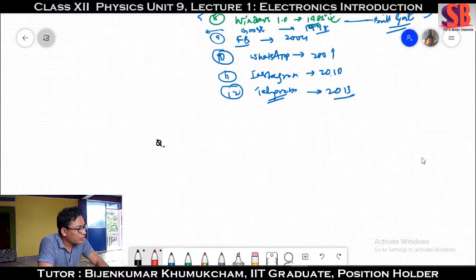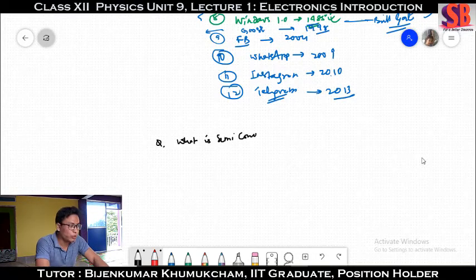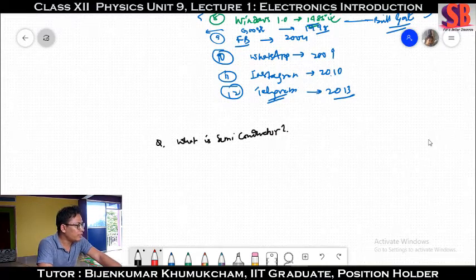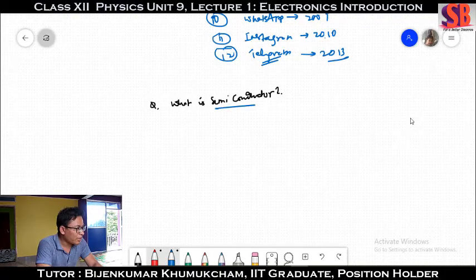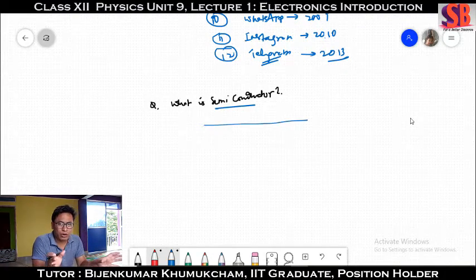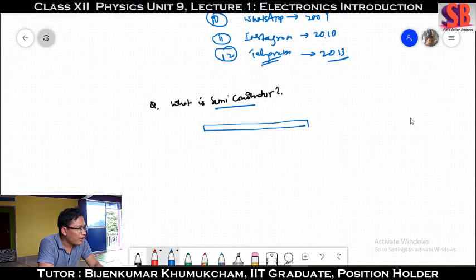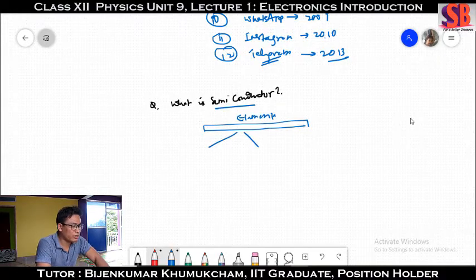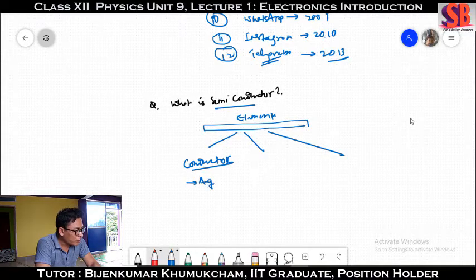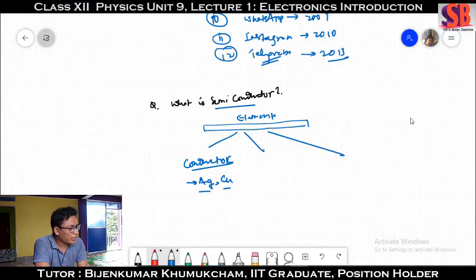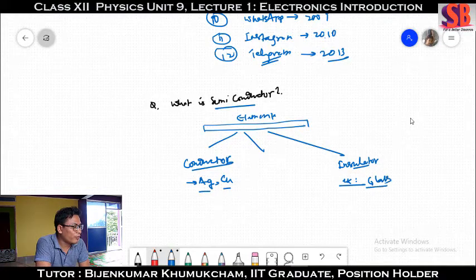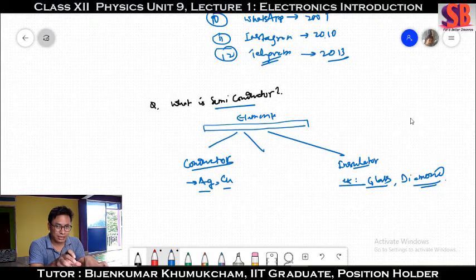What is a semiconductor? This is the definition. For the exam point of view, the final energy concept gives the definition. It is a semiconductor. One of the best conductors is silver — argentum — then copper. Glass and diamond are insulators.